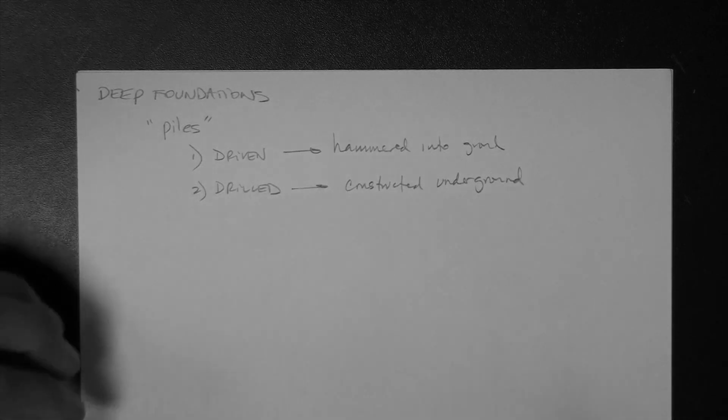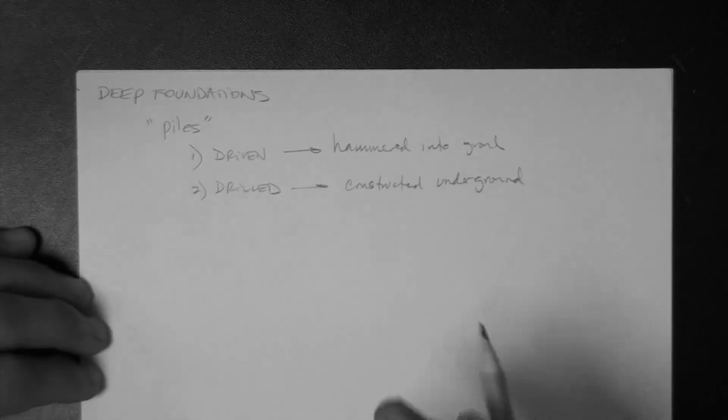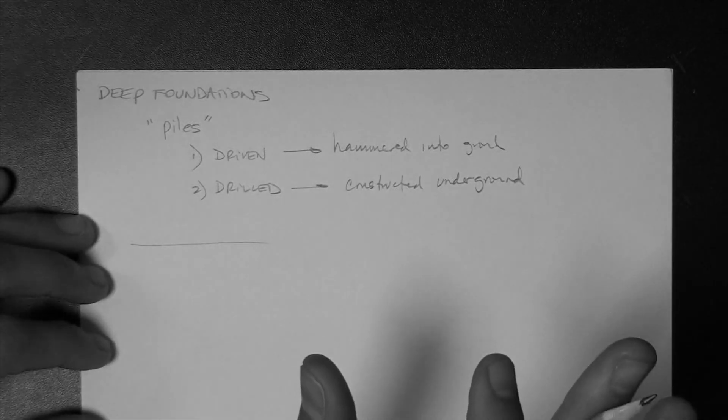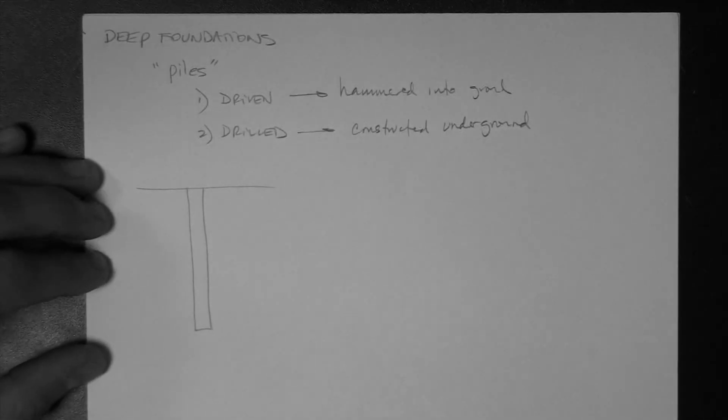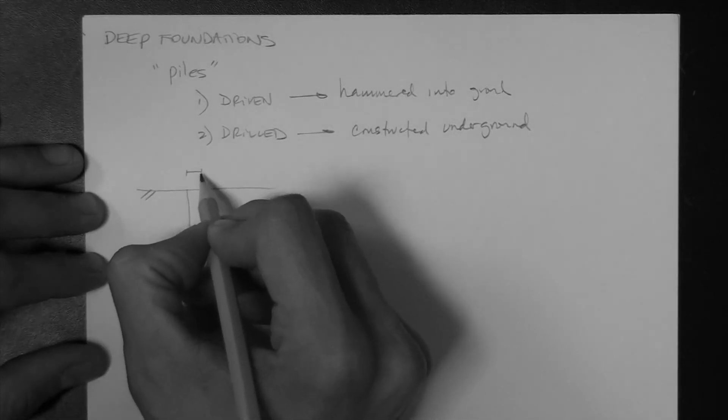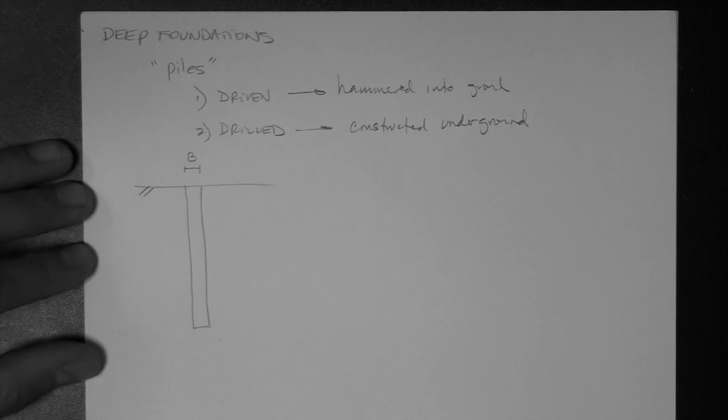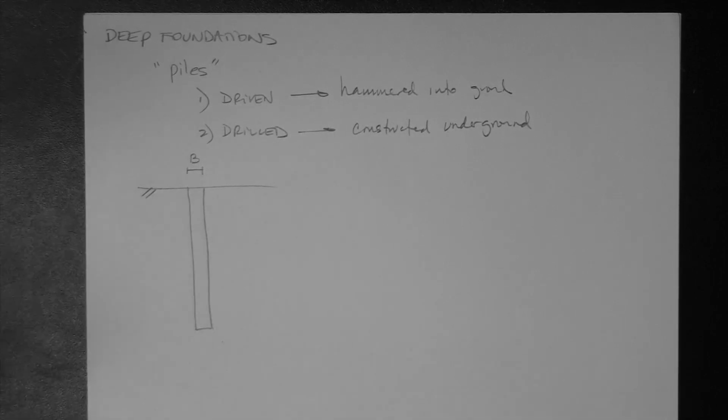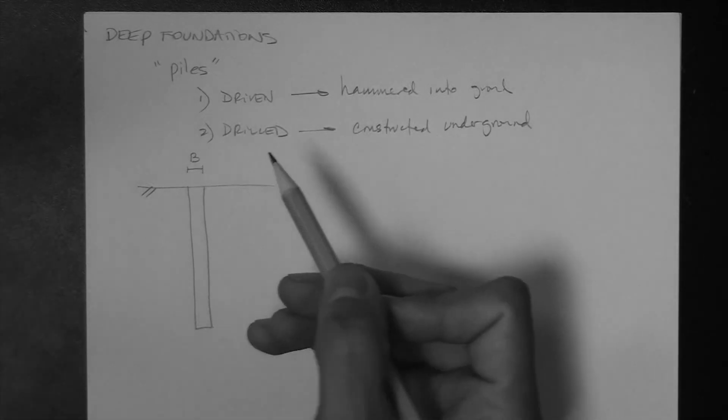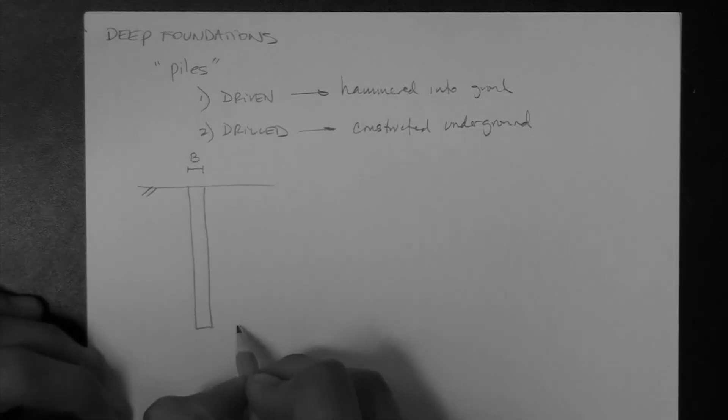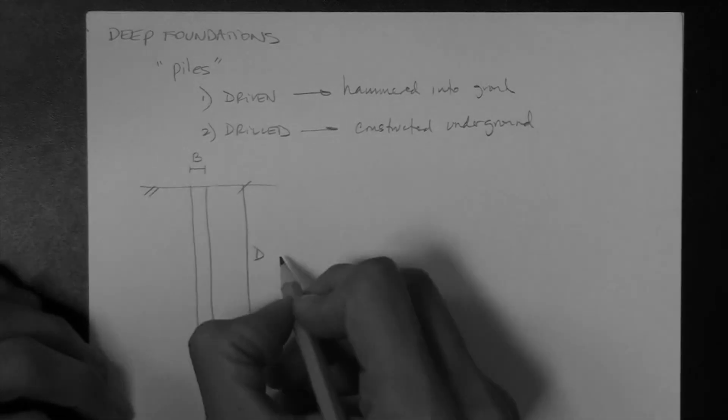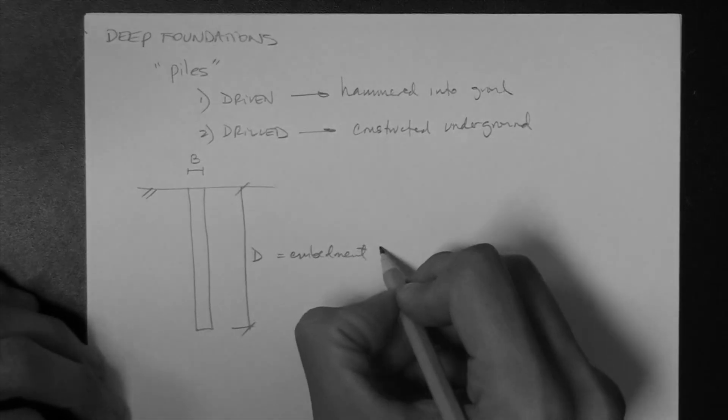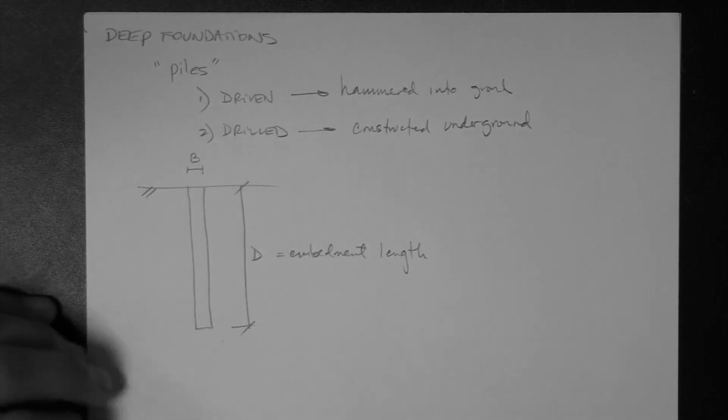Let's actually describe what a pile looks like. Generally, a pile looks like this, regardless of whether it is driven or drilled. It essentially looks like a submerged column. So, this is a ground surface, and this is the width or diameter of the pile, which generally the width of a footing or of a mat or of a pile is termed, or the letter B is used to term the width. A pile has a length, D, which is the embedment length.